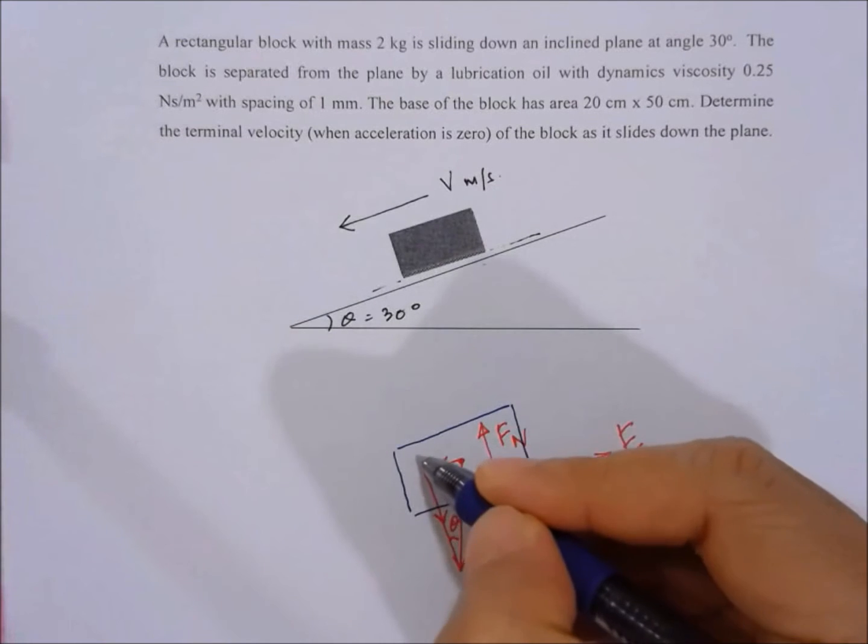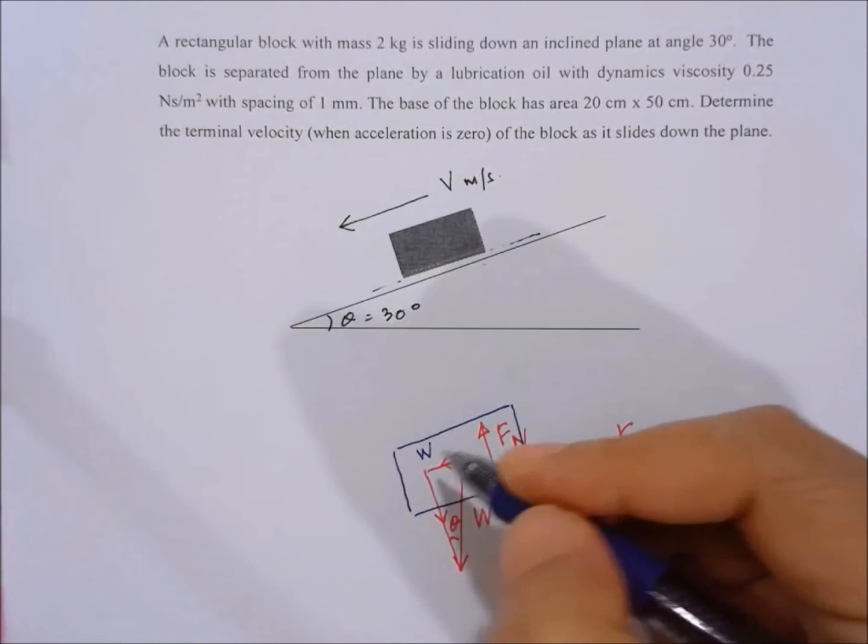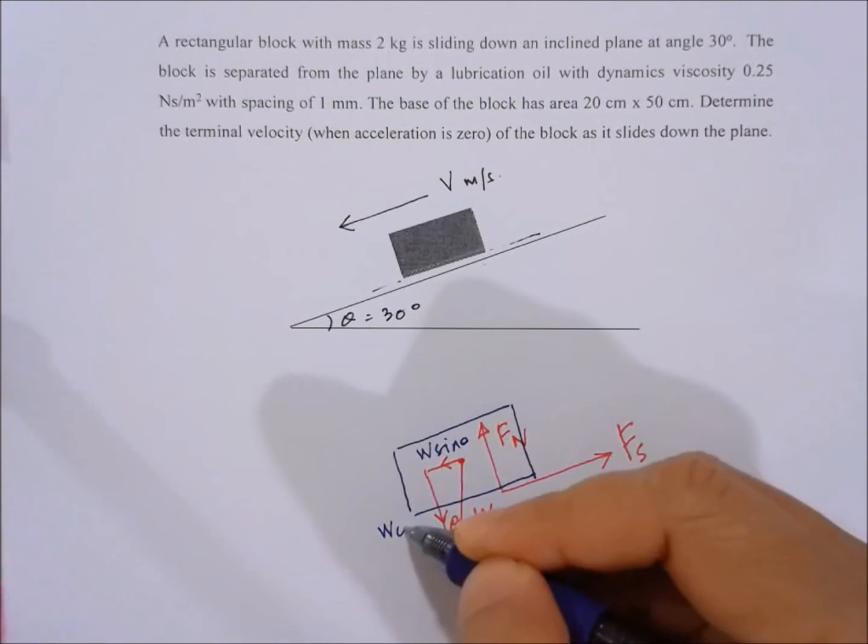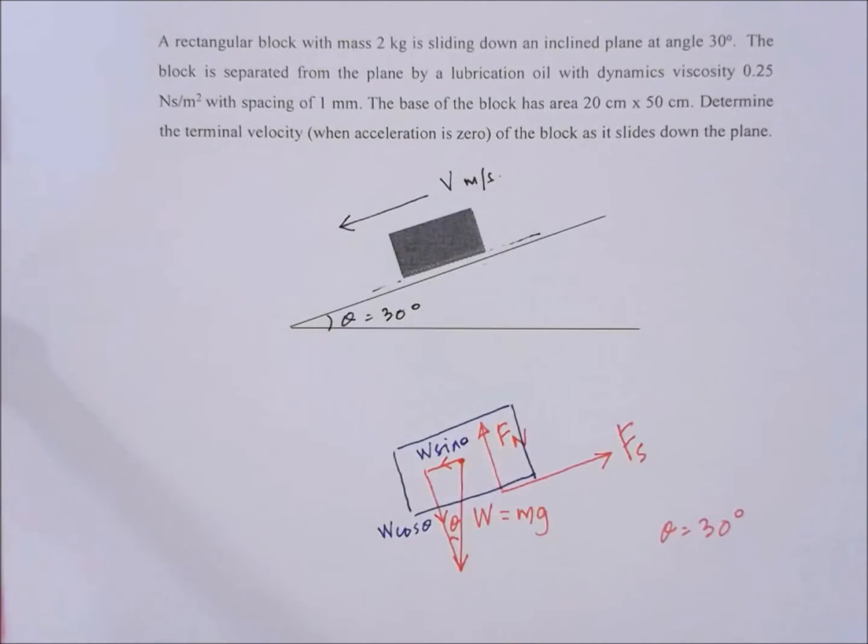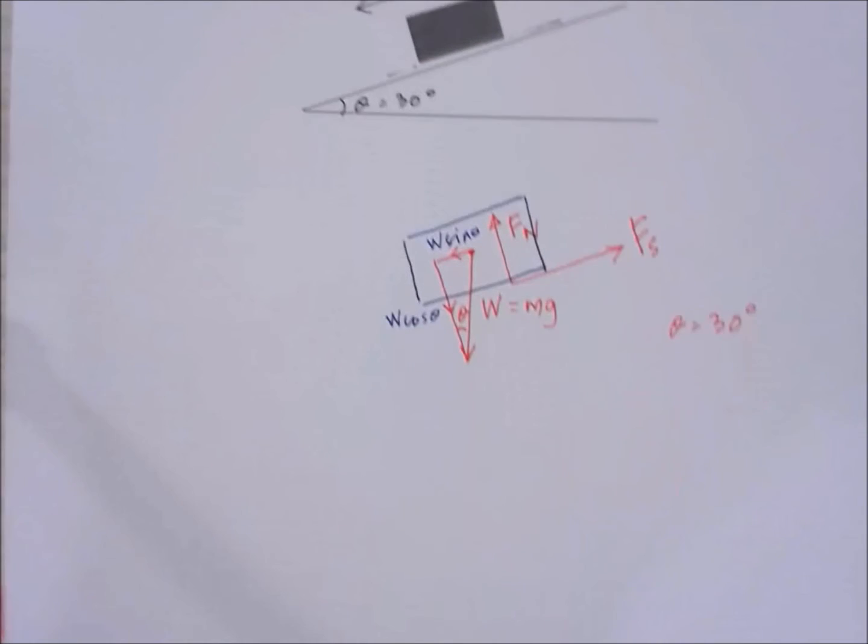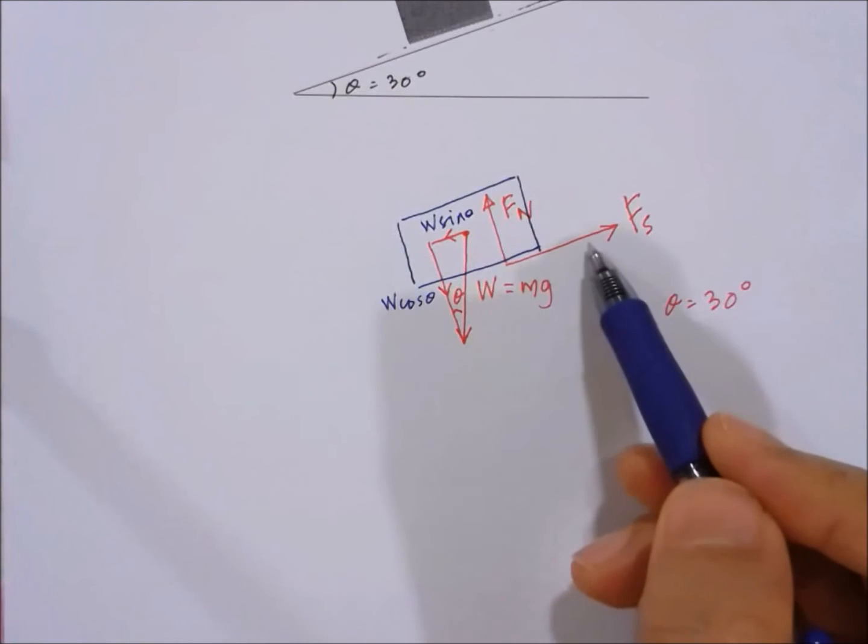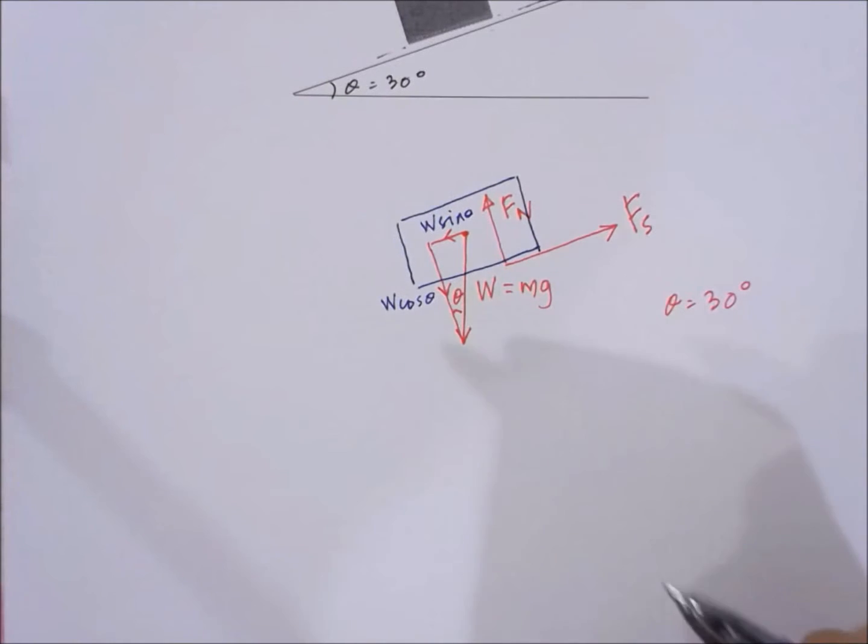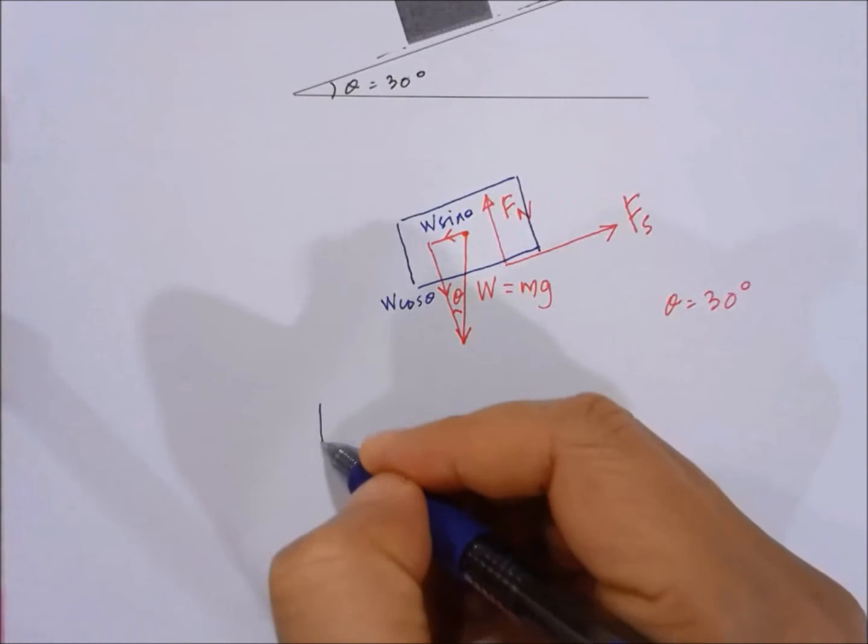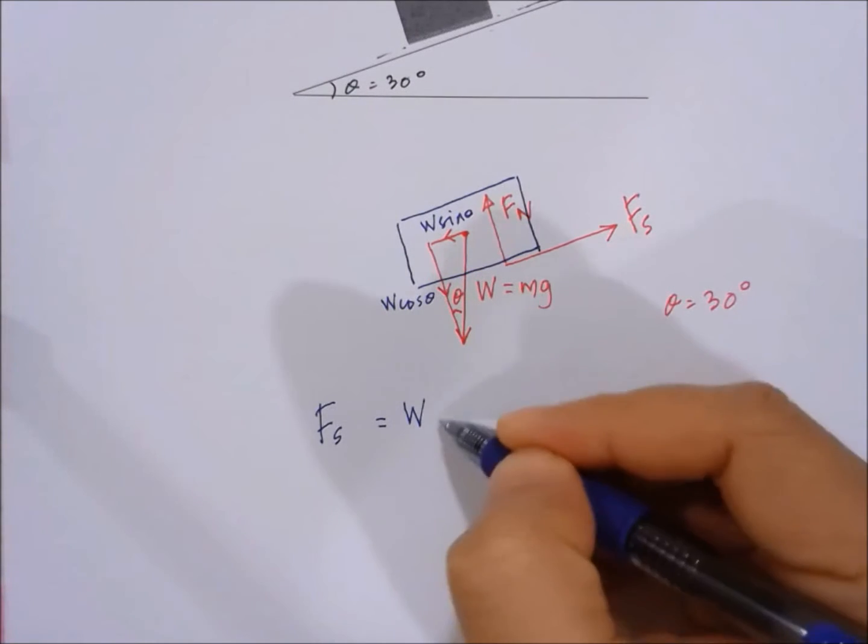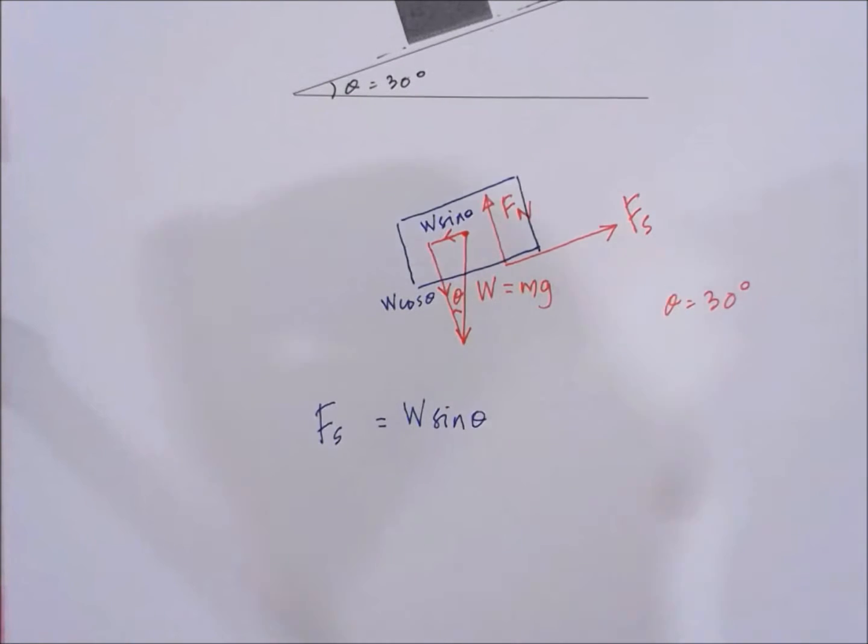This one here is equal to W sin theta, and this one here is equal to W cos theta. Now we can resolve the forces in the direction which is perpendicular to the ramp, so we can write that the shear force is equal to W sin theta.